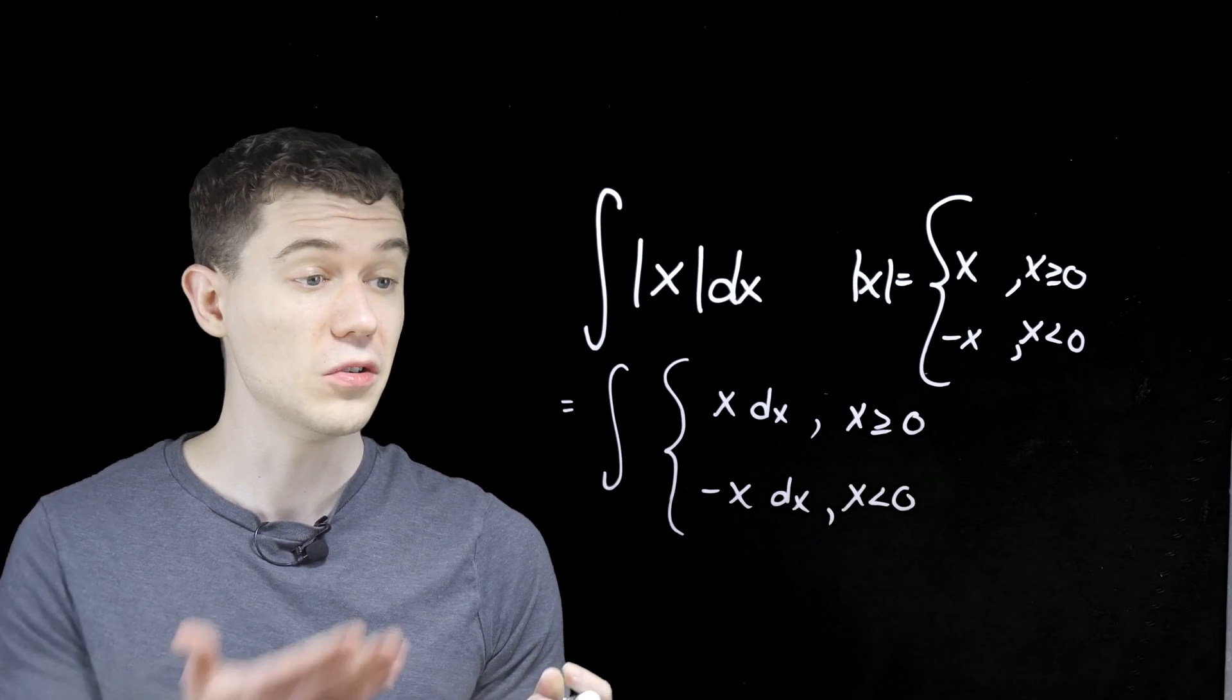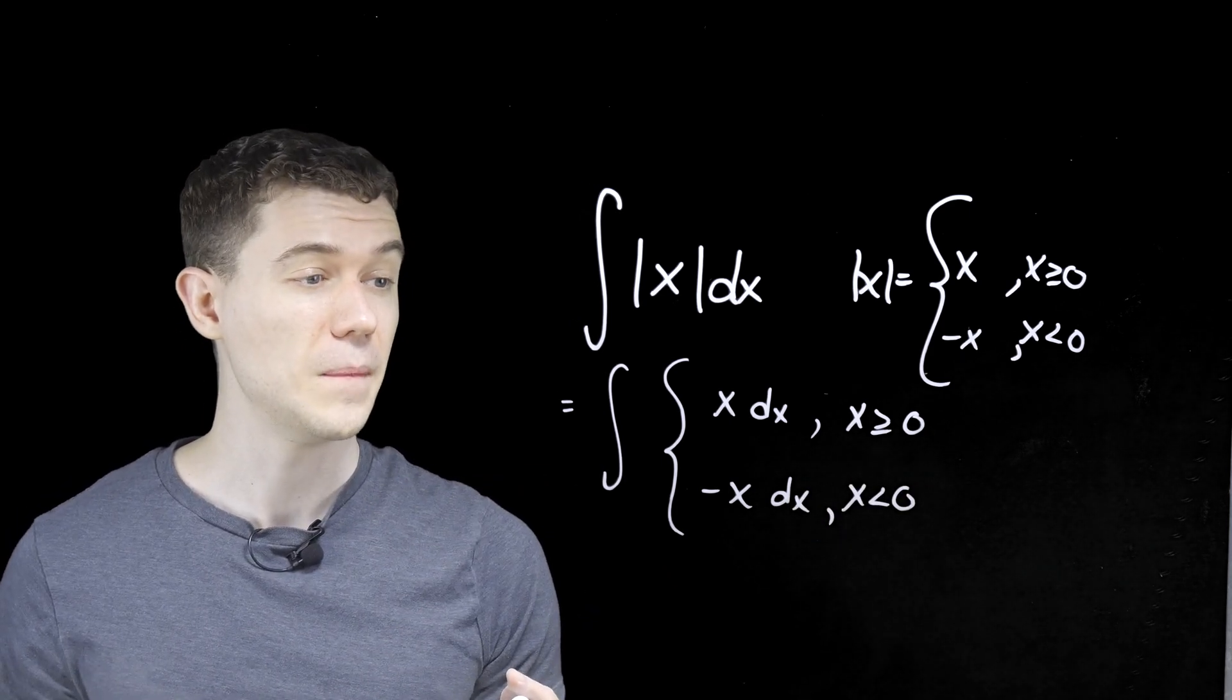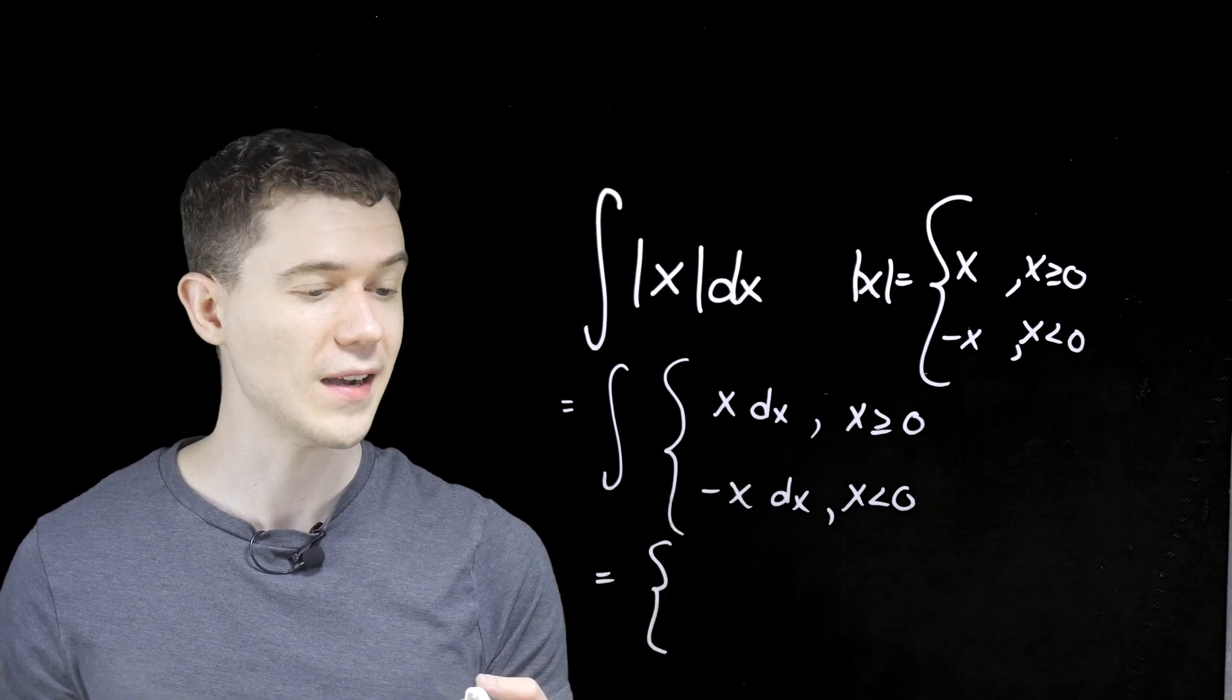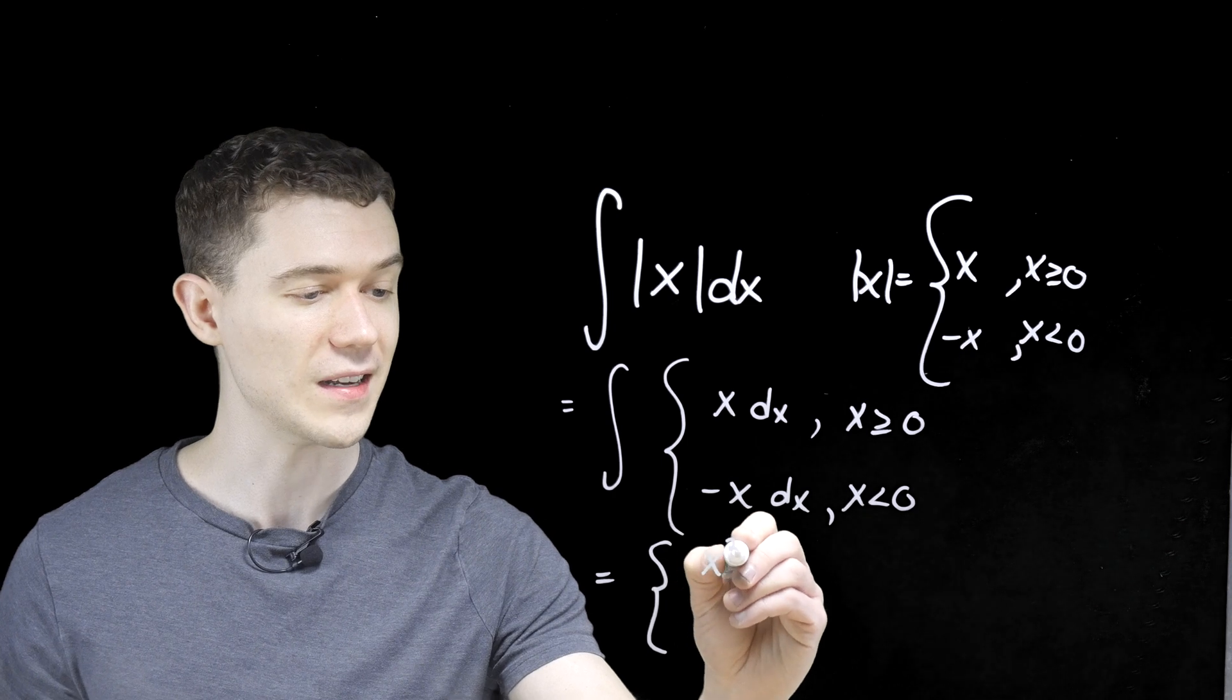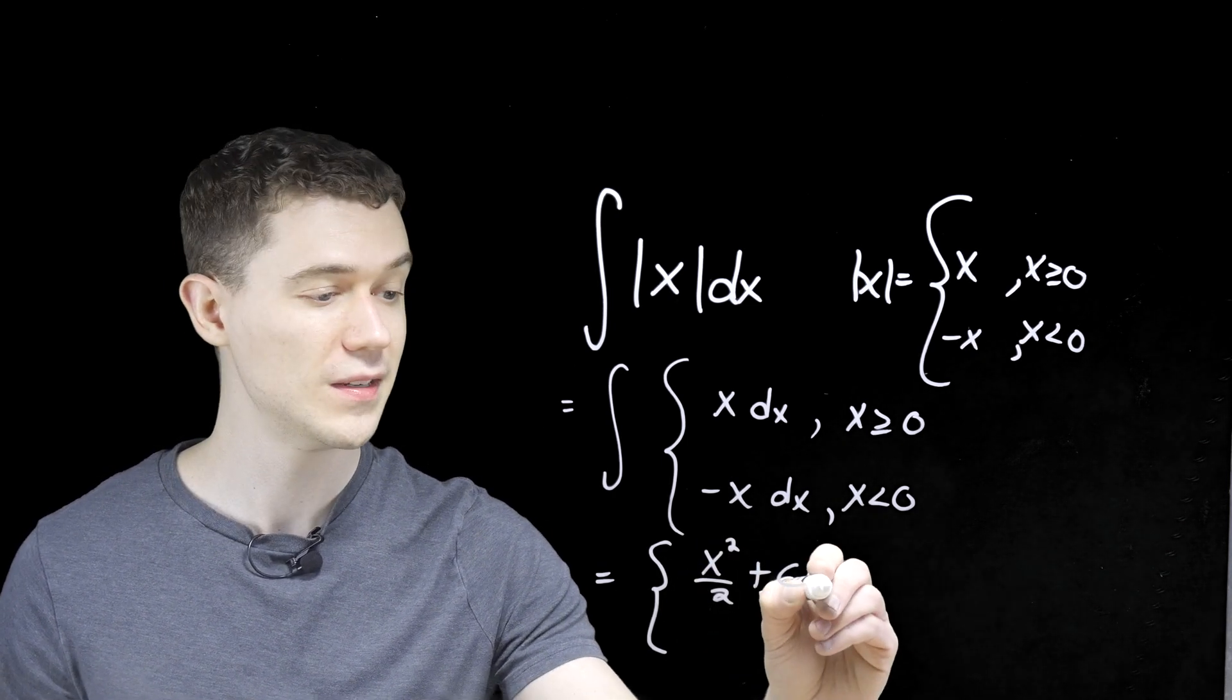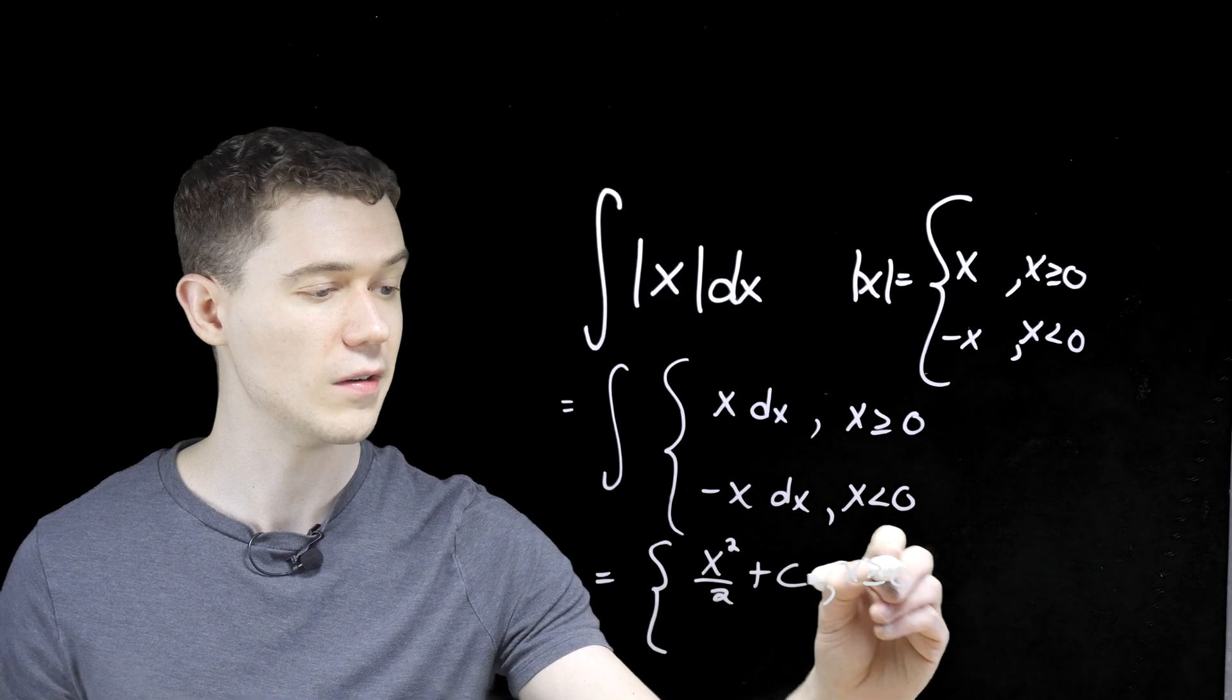All we have to do is antiderive each individual piece on its respective domain. So what's the antiderivative of x dx? Well, it's x squared over two plus c, of course. We're doing antiderivatives, and this is for x greater than or equal to zero.